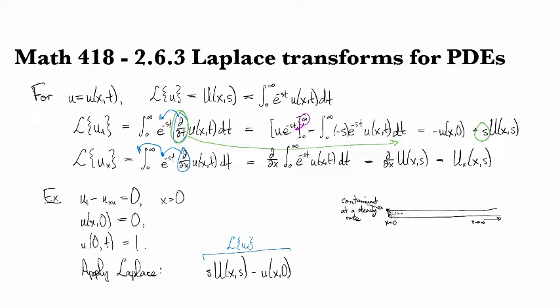And when we transform our initial condition, we get a boundary condition of U(0,s) is one over s. So the Laplace transform of one is one over s.